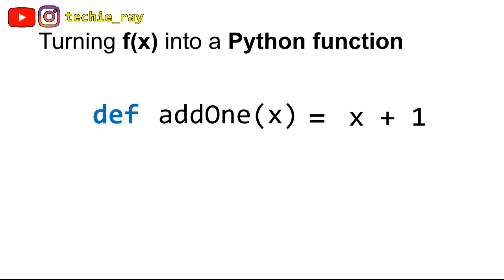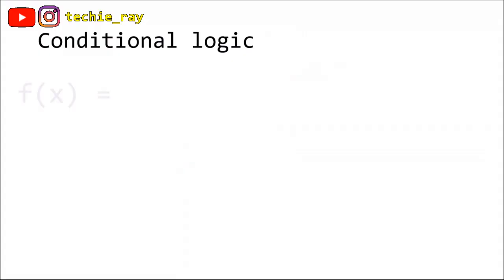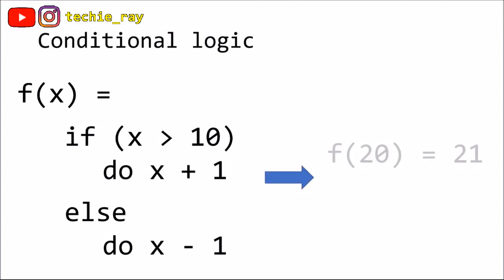A function can also have more complex rules than just simple arithmetic. For example, you can use conditional logic, that is, if A, then do B, else do C.